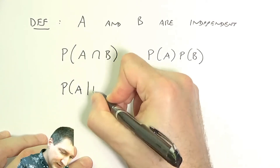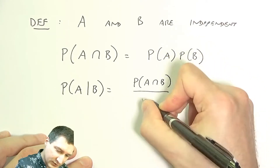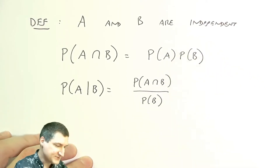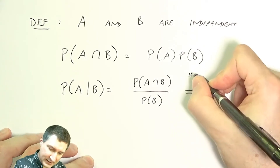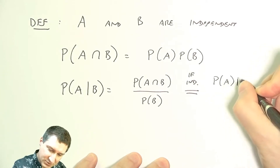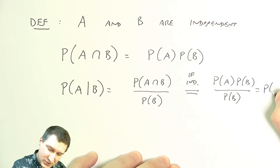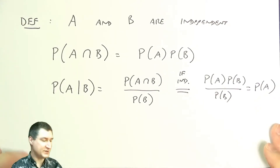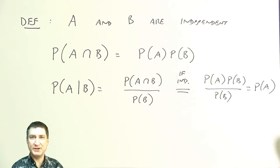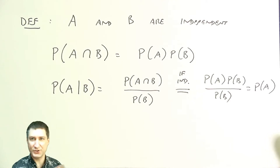Using the concepts from conditional probability: P(A|B) = P(A∩B) / P(B). If the events are independent, the top becomes P(A)·P(B) over P(B), which simplifies to P(A). So another way of thinking about this is that if two events are independent, telling you that B happened doesn't change my understanding of whether A happened or not — knowing B has no effect on A.